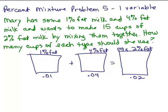Now notice that we're trying to get 15 cups total in this 2% mixture. So what we know is there are going to be 15 cups of milk here. And I'm trying to find how many cups of each, the 1% and the 4%, to put in here.